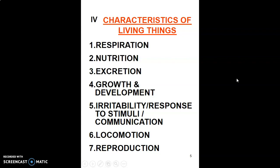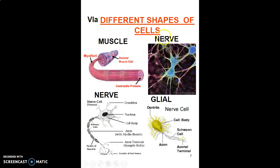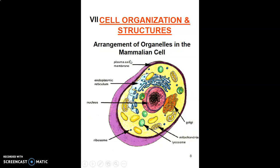Growth and development, irritability, locomotion, and reproduction. Many cells of the same structure and function form a tissue; many tissues serving the same function form an organ; and organs form an organ system. We have different types of cells in the body: muscle cells, nerve cells, glial cells, and so on. Cells are covered by a cell membrane and contain organelles and inclusions, where organelles are membrane-bound and inclusions are non-membrane bound.